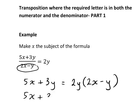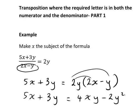So the left-hand side is still the same for now, 5x plus 3y. Expanding those brackets on the right, 2y times 2x will become 4xy, 2y times negative y, that gives us minus 2y squared.